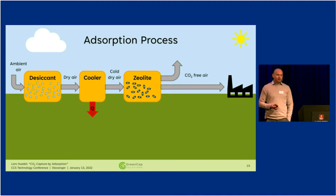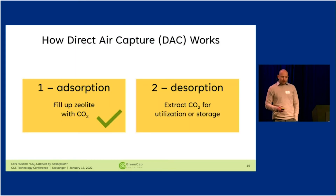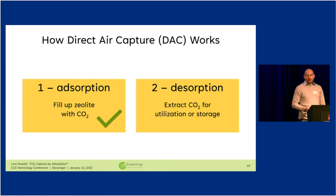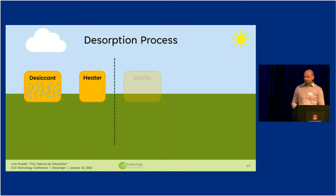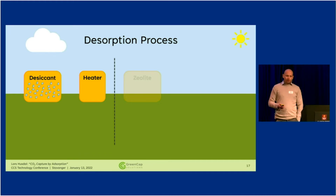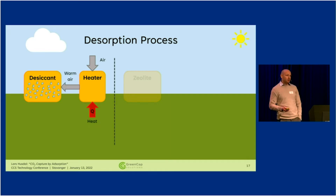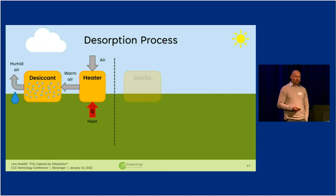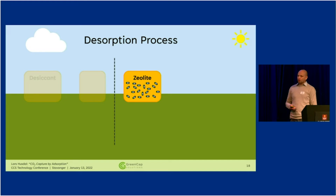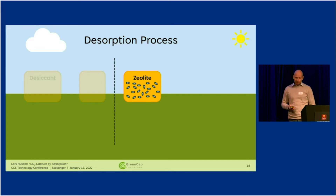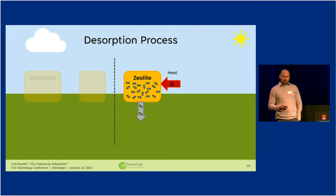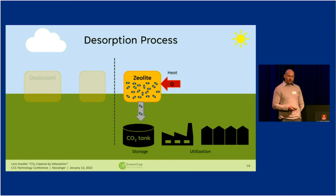We continue this process until the zeolite is filled up with CO2. Once done, we need to extract the CO2 and regenerate our system. For the desiccant, to get rid of the water, it's quite simple — we heat it up, blow warm air through the desiccant, the water gets picked up, and we get humid air out. For the CO2, we want to use a closed loop so we don't dilute the CO2 concentration. We add heat, the CO2 gets released, and we can deliver it to either storage or end users like a greenhouse or other types of industry.